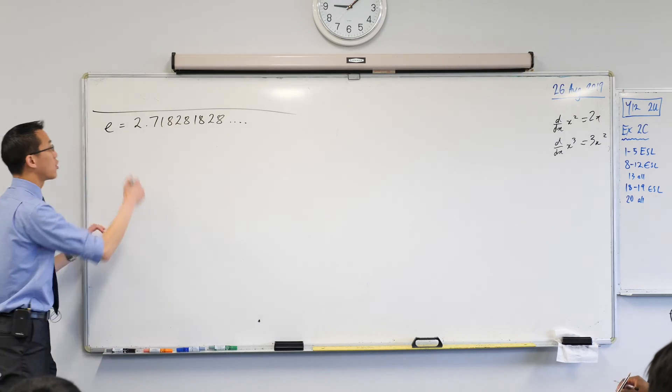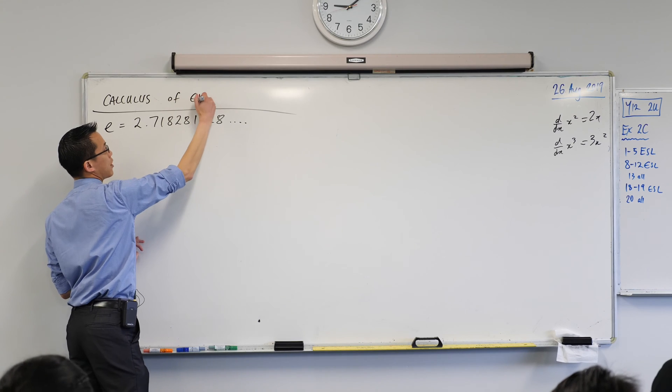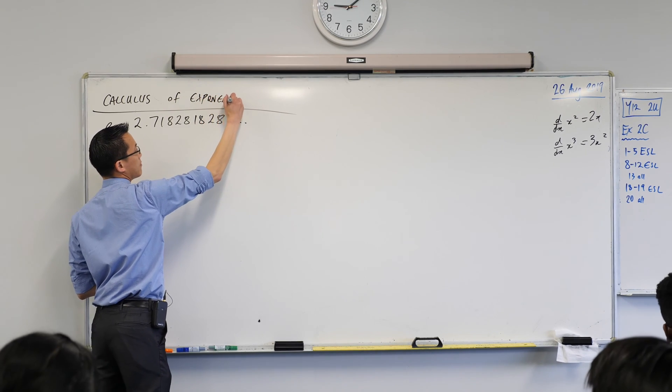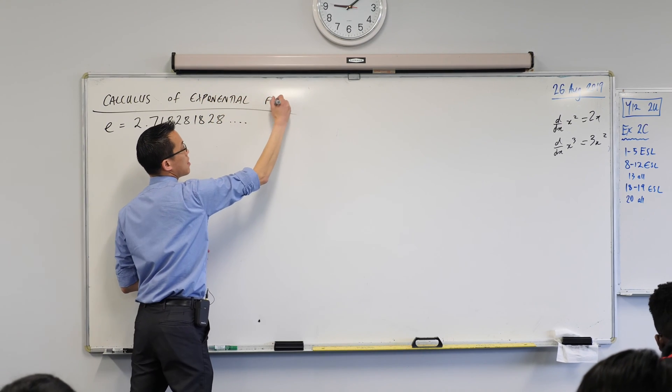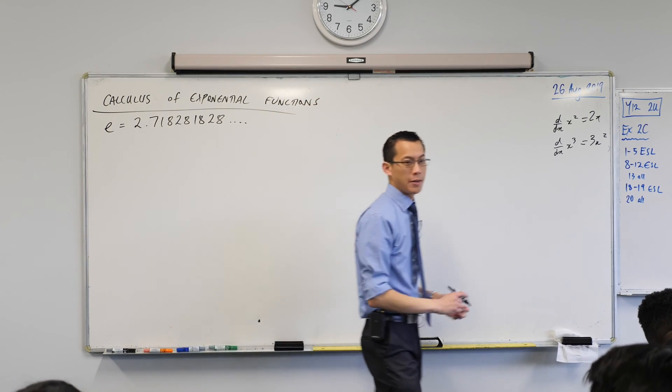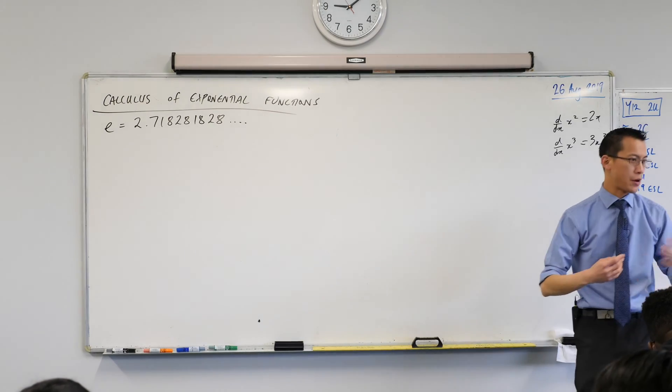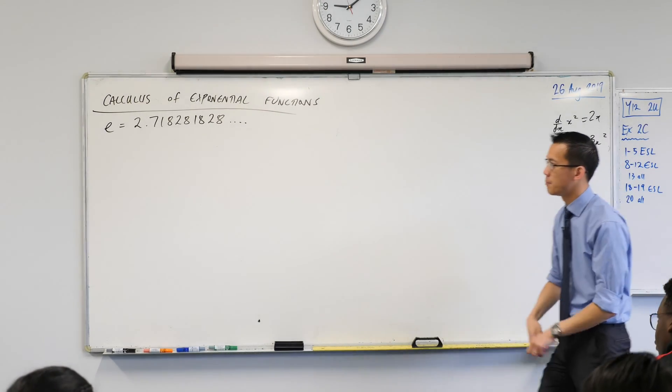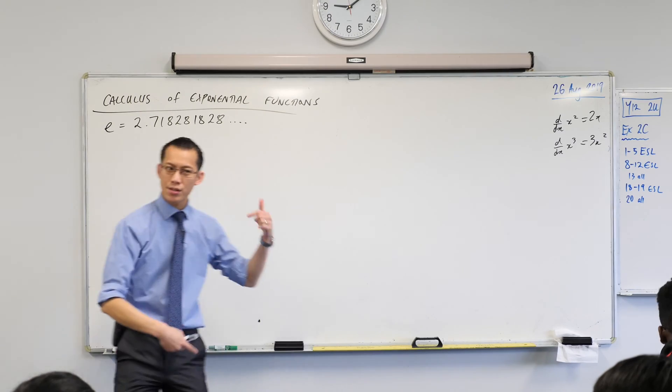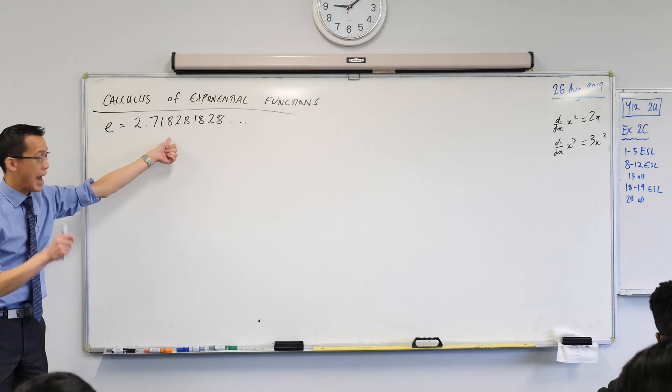If you want to make a title, you can call this Calculus of Exponential Functions. Now, we looked at a bunch of different exponential functions, like 2 to the power of x, 3 to the power of x, 4 to the power of x, and so on. But when you made the base this number, something unusual happened.